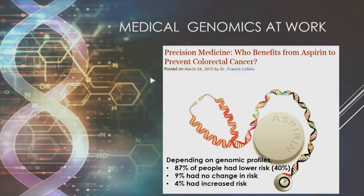However, there is 9% of Americans for which taking aspirin has no change in risk and might actually increase the likelihood for intestinal bleeding. And oddly enough, there are 4% of Americans that have an increased risk for colorectal cancer if they take regular aspirin.